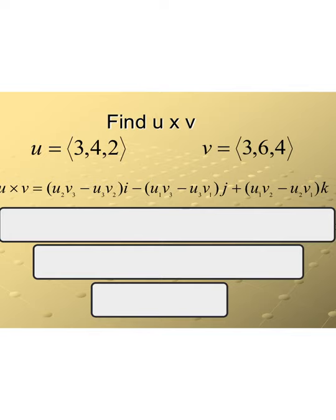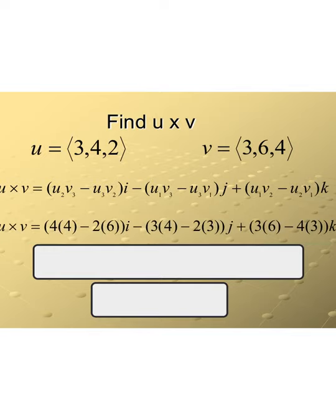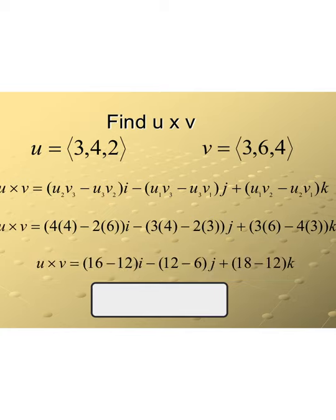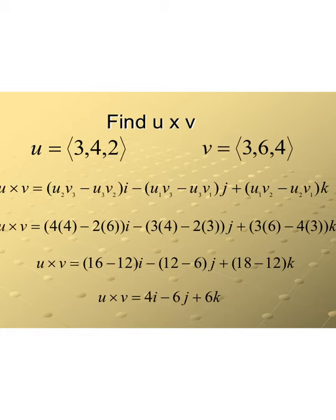When we plug in our actual components, we have (u2·v3 − u3·v2)i, minus (u1·v3 − u3·v1)j, and then (u1·v2 − u2·v1)k. After simplifying, our final cross product is the vector 4i − 6j + 6k. Since this result is orthogonal to the original vectors, taking the dot product of this cross product with either original vector should give 0 — a nice way to verify correctness.